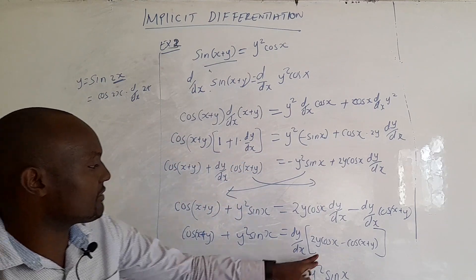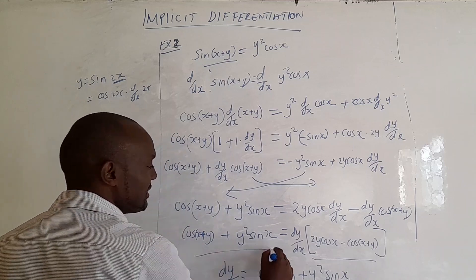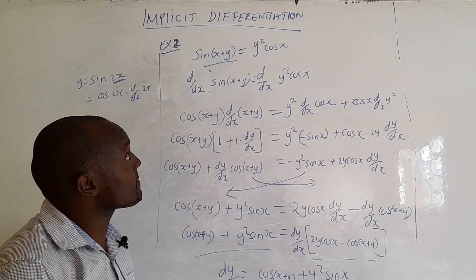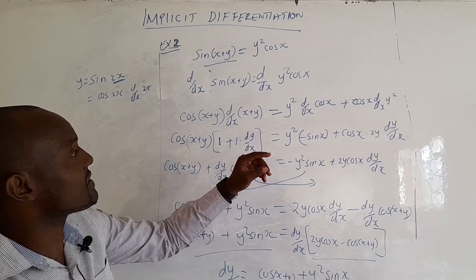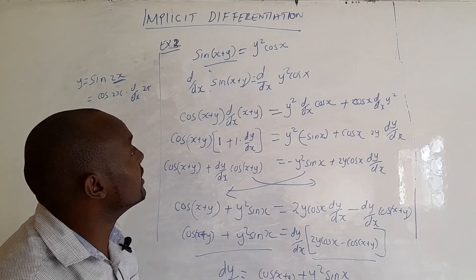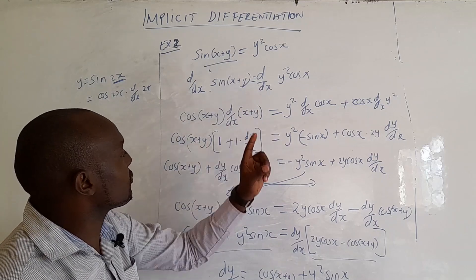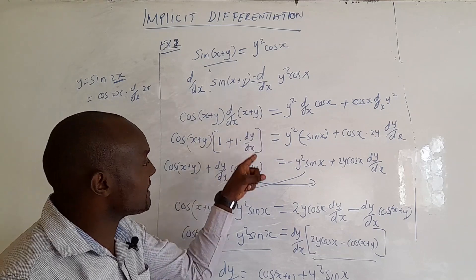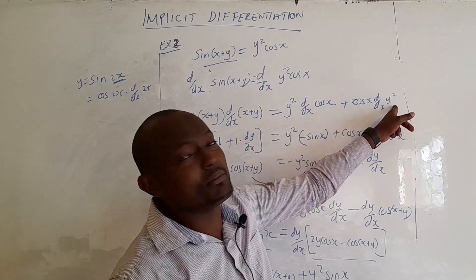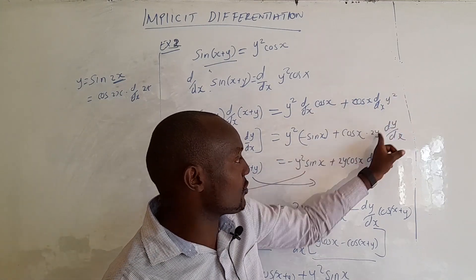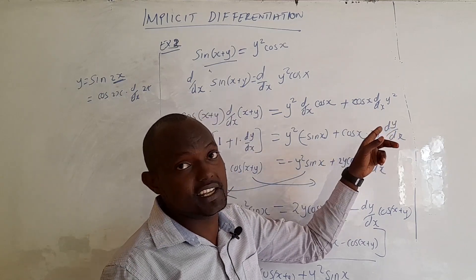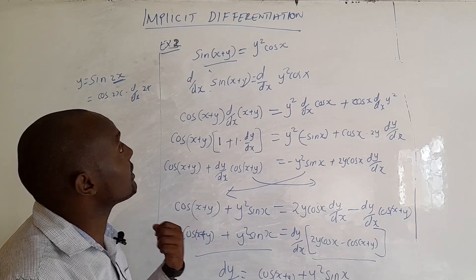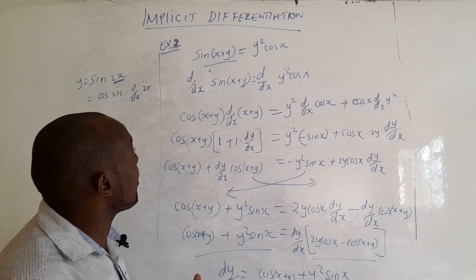Dividing both sides, dy/dx equals (cos(x+y) plus y squared sin x) over (2y cos x minus cos(x+y)). That is how we solve Example 3. The key rule to remember: whenever you differentiate a term containing y, you must multiply by dy/dx. When differentiating y you get 1 times dy/dx; when differentiating y squared you get 2y times dy/dx. Then you collect and isolate dy/dx to get your final answer.